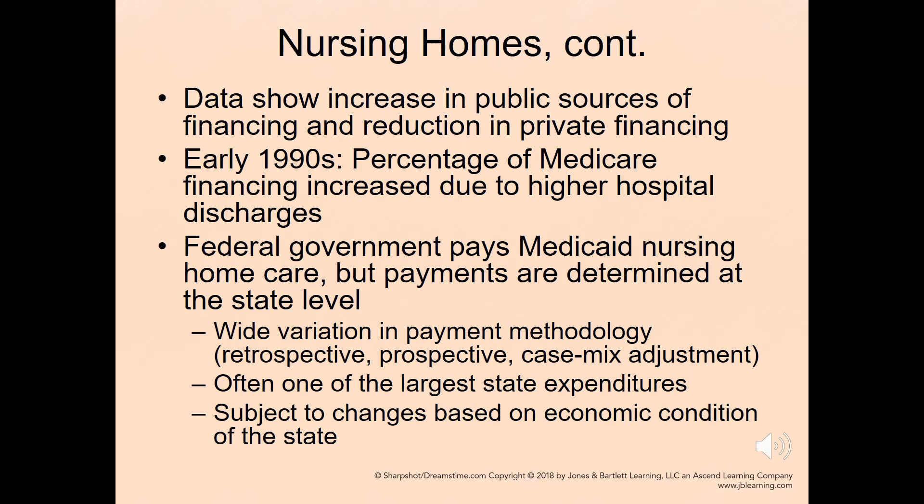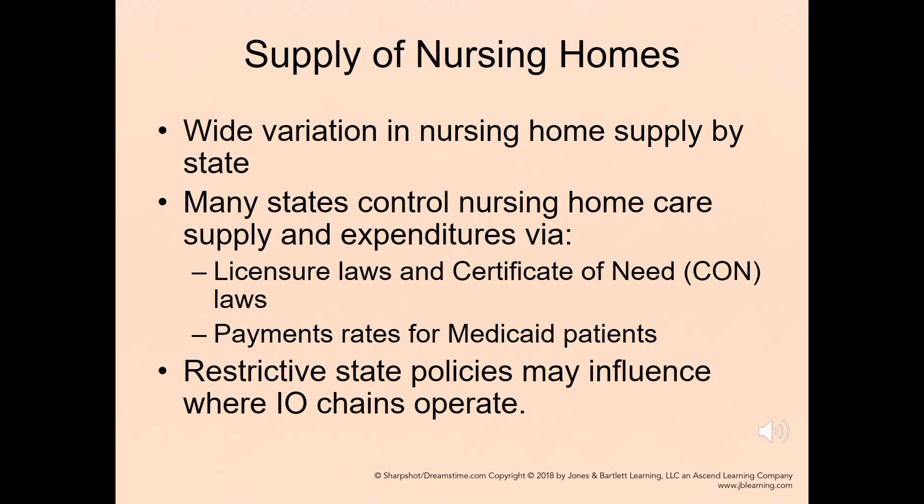Medicaid nursing home care is often one of the largest state expenditures, and it is subject to changes based on the economic condition of the state. There is wide variation in nursing home supply by state. Most states control nursing home care supply and expenditures via licensure laws, certificate of need laws, and the payment rates for Medicaid patients.